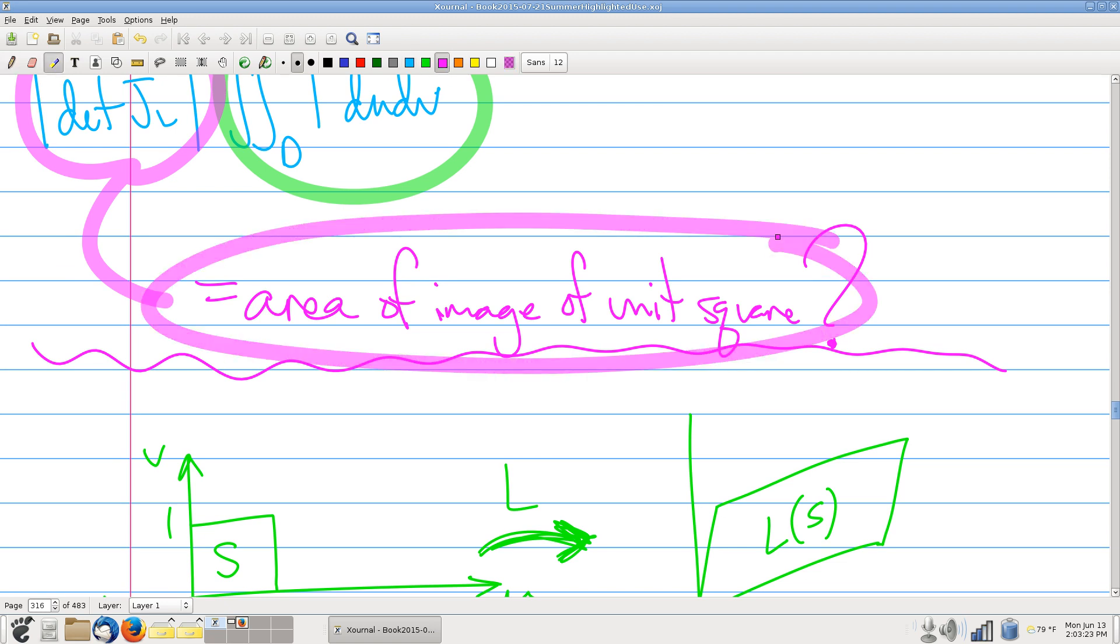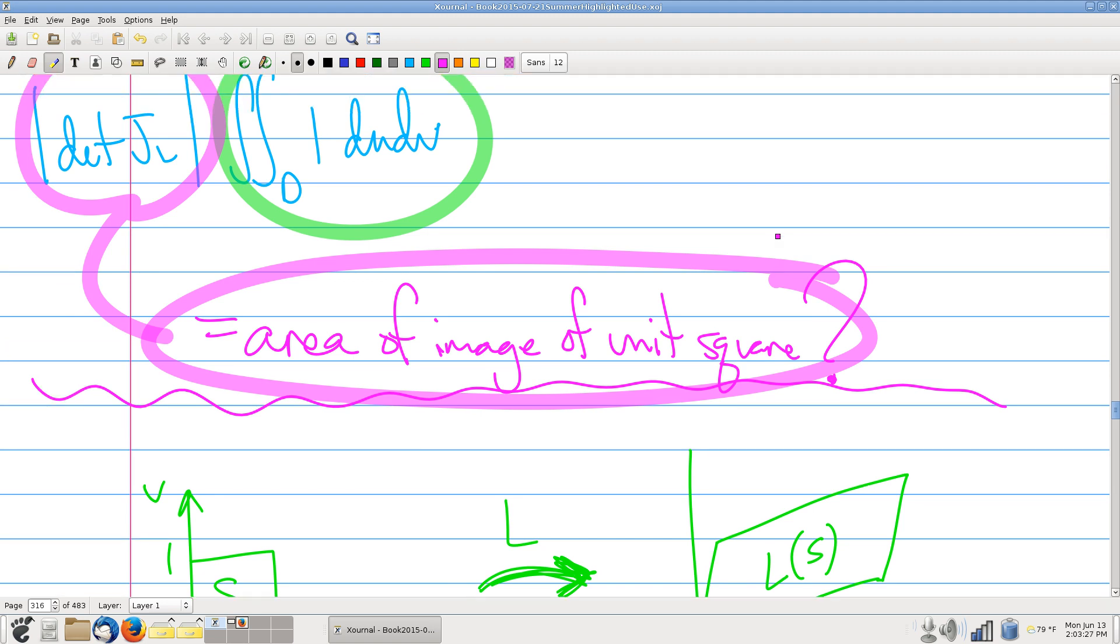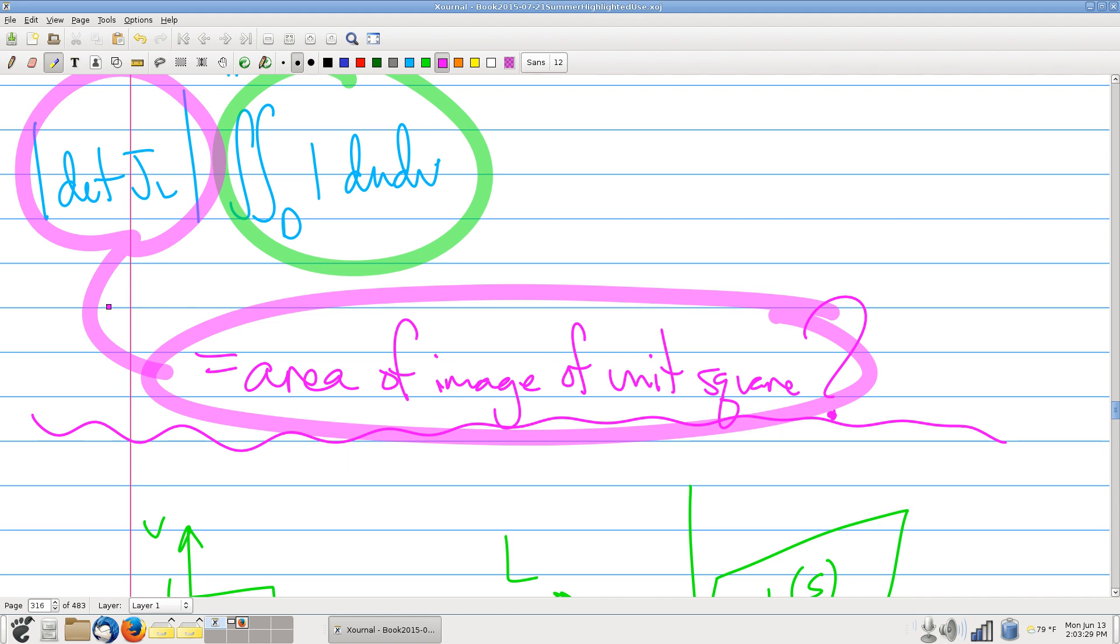why is this equal to the absolute value? Why is this equal to this? Yes, this was our big question. Why is that area equal to that Jacobian determinant?